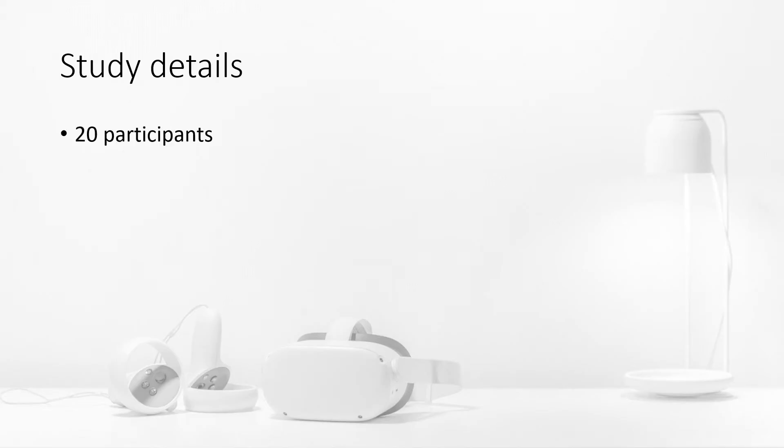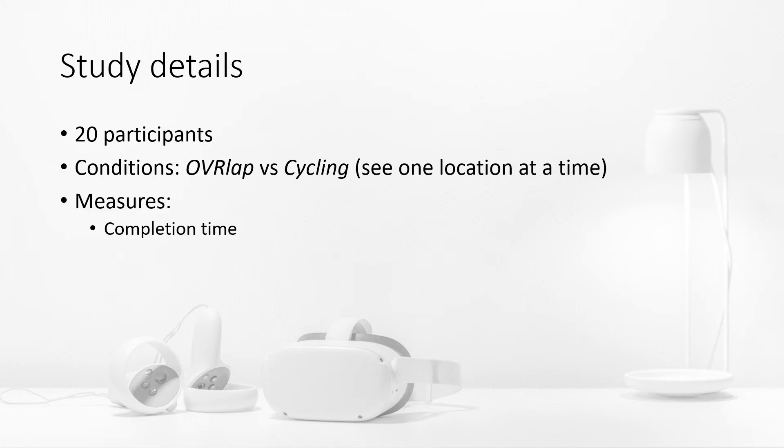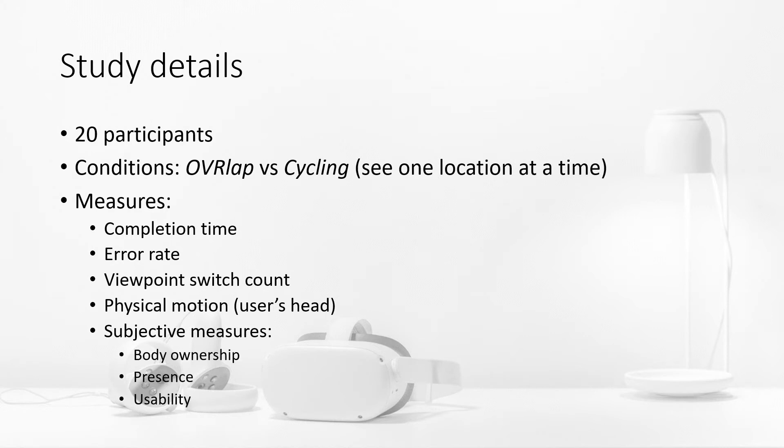Twenty participants completed each task using the OVRlap technique and with a control condition where participants cycled through the locations one at a time, similar to ordinary virtual reality. We measured completion time, error rate, viewpoint switch count, physical motion exerted by the user's head, and subjective measures of body ownership, presence and usability.